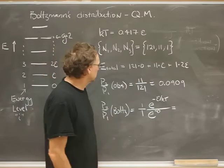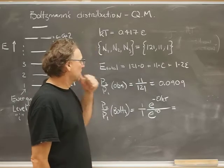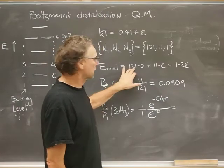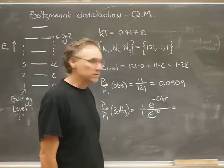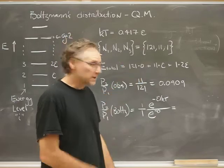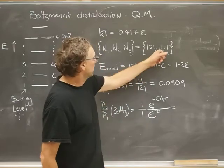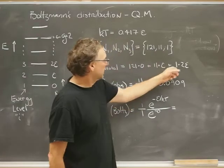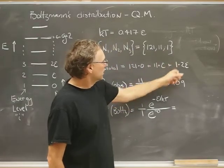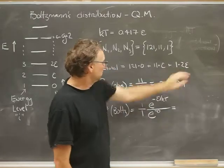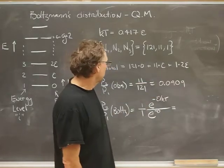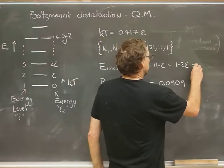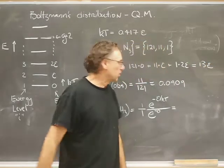One thing that's good to do to get warmed up is to say, what's the total energy of the system? I just count the number of molecules in the ground state multiplied by its energy which is 0, then 11 molecules in the first state which has energy epsilon, plus one molecule in the second state which has energy 2 epsilon. If you add those all up you get 13 epsilon, so that's the total energy.